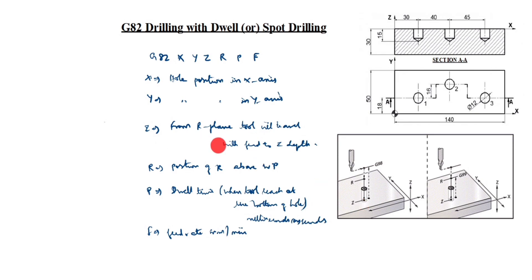Z is here, from R plane, tool will travel with feed to Z depth up to here, this is final depth. R is position of R above the workpiece. You see here, this is the workpiece, above the workpiece is R. P is the dwell time when tool reaches at the bottom of hole, so the pass time is here only, at the bottom of the hole. We will give 2000 milliseconds, means it takes two seconds the pass time.